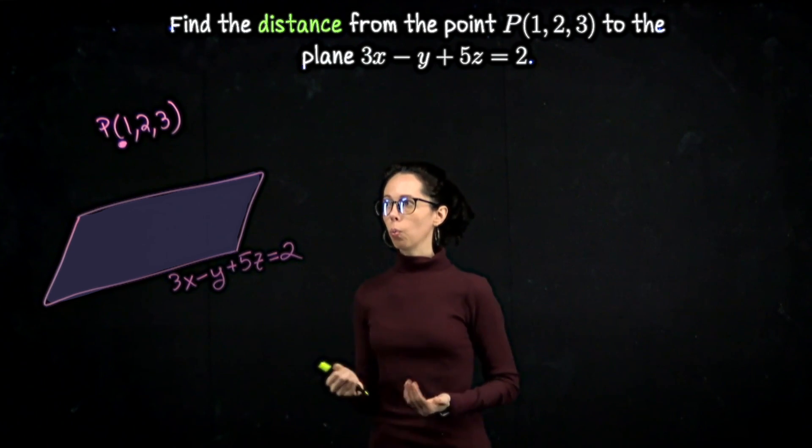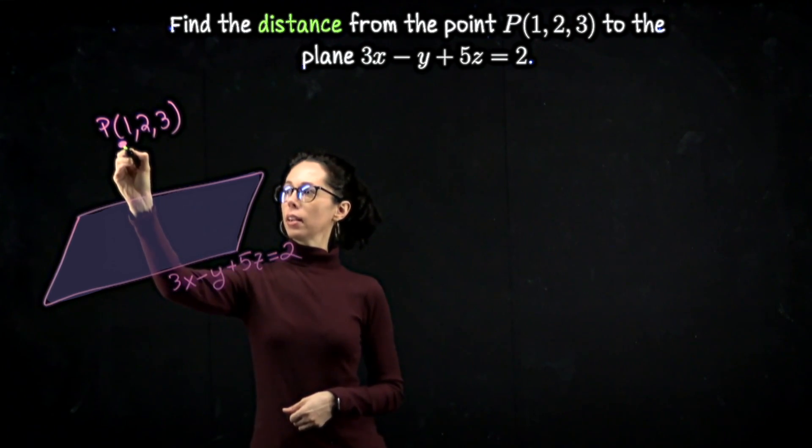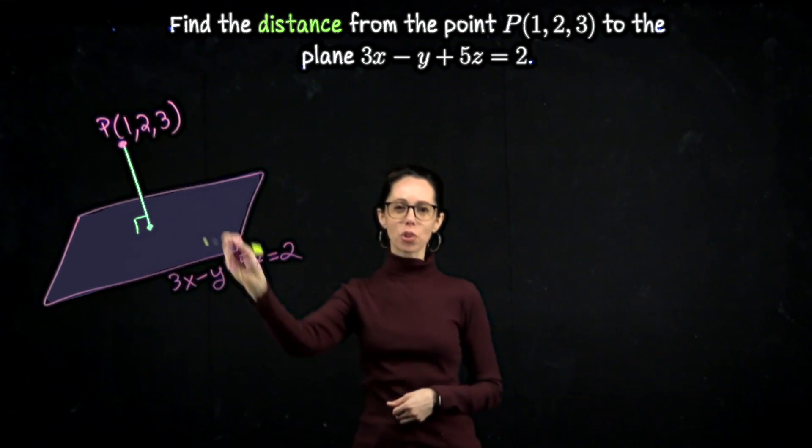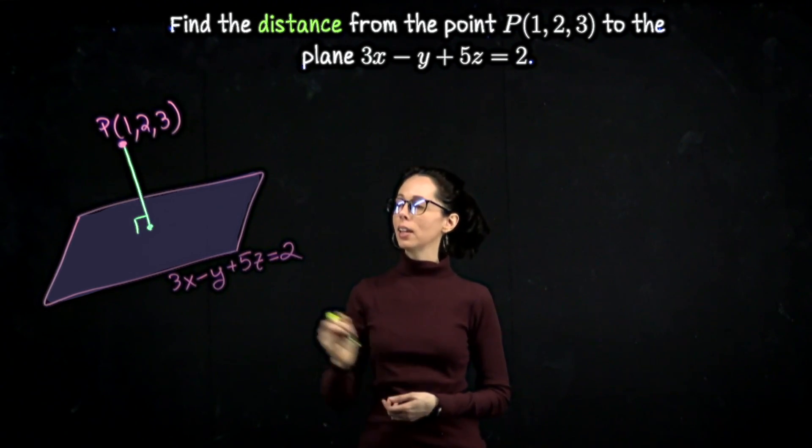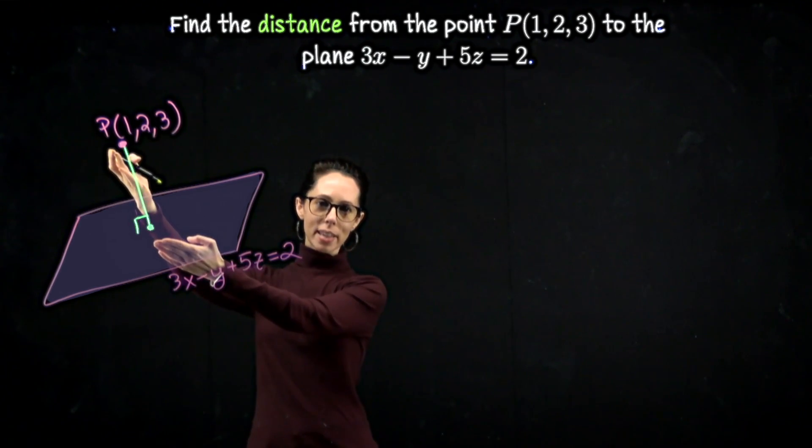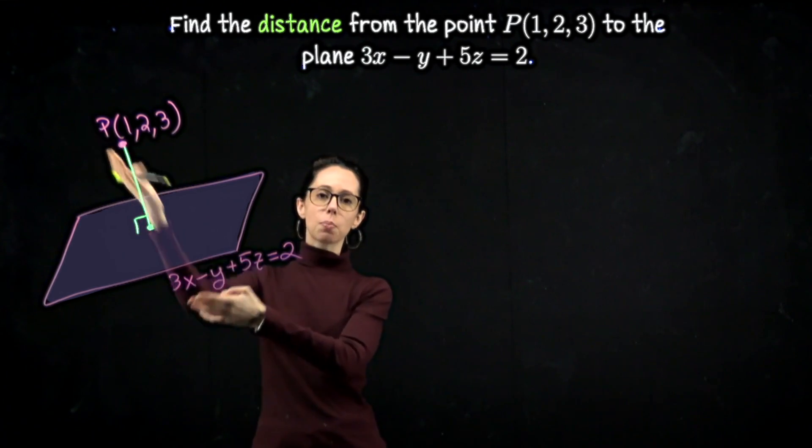This picture might not be accurate, but it's completely usable for what we need. In particular, what we hope to find is the length of this line segment, where I'm trying to draw this so that we drop straight down from P to the plane in a way which is perpendicular to the plane. So the length of this line segment is the perpendicular distance from this point to this plane.